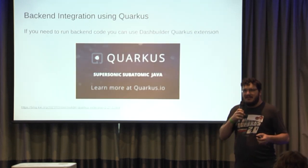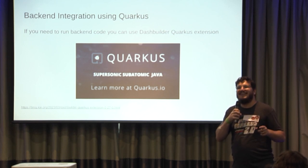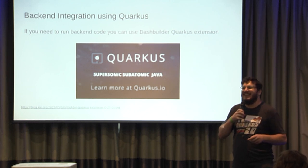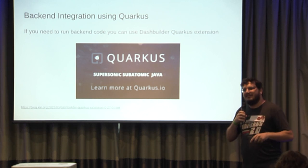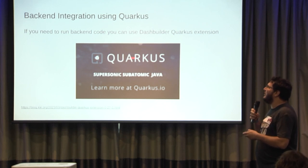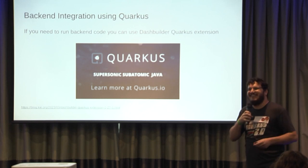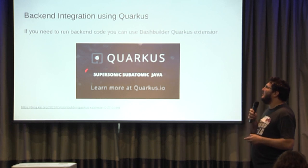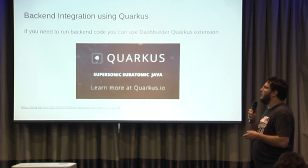If you need a back-end, Dash Builder has a Quarkus extension. Is anyone here a Java programmer? It's hard to find Java programmers at a data conference — usually people like Python — so I'm always the exception because I love Java. We have this tool called Quarkus. You can also use Kotlin, which is a little better than Java at least. So you can use Kotlin with Quarkus to put your dashboards with a back-end — it's really easy to integrate.